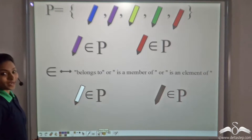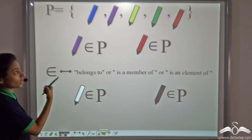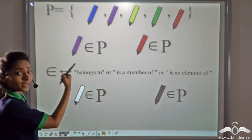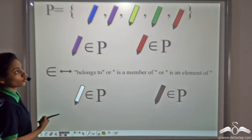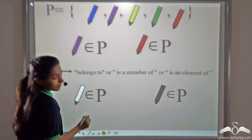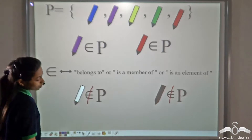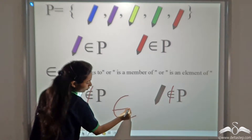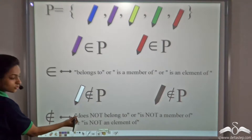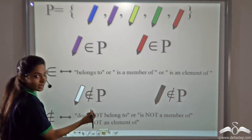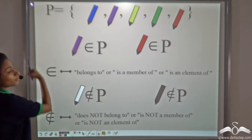Now what about a white pen? Do you have a white pen in your set, or does a white pen belong to your set? No, we do not have any white pen in the set. What about a black pen? No. So we can say that a white pen or a black pen does not belong to the set P. 'Does not belong to' is denoted by the strikethrough symbol, which refers to 'does not belong to', 'is not a member of', or 'is not an element of' P.